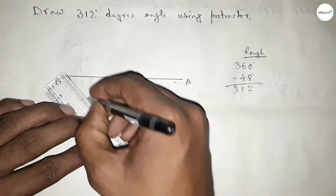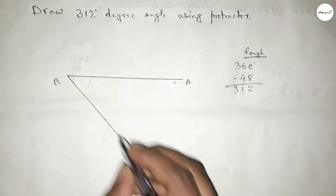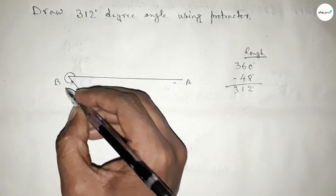So if we subtract 48 degree angle from 360 degrees, then we can get 312 degree angle.